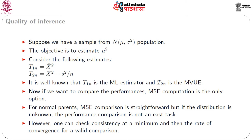Now we shall discuss how to judge the quality of inference in large samples. Suppose we have a sample from a normal mu, sigma squared population, where mu and sigma squared are both unknown, and the objective is to estimate mu squared. Consider the estimator T_1n, which is X-bar squared, and T_2n, which is X-bar squared minus S squared over n. It is well known that T_1n is the MLE and T_2n is the minimum variance unbiased estimator. If we want to compare performances, MSE computation is the only option. For normal parents, MSE comparison is straightforward, but if the distribution is unknown, the performance comparison is not easy. However, one can check consistency at a minimum and then the rate of convergence for a valid comparison.